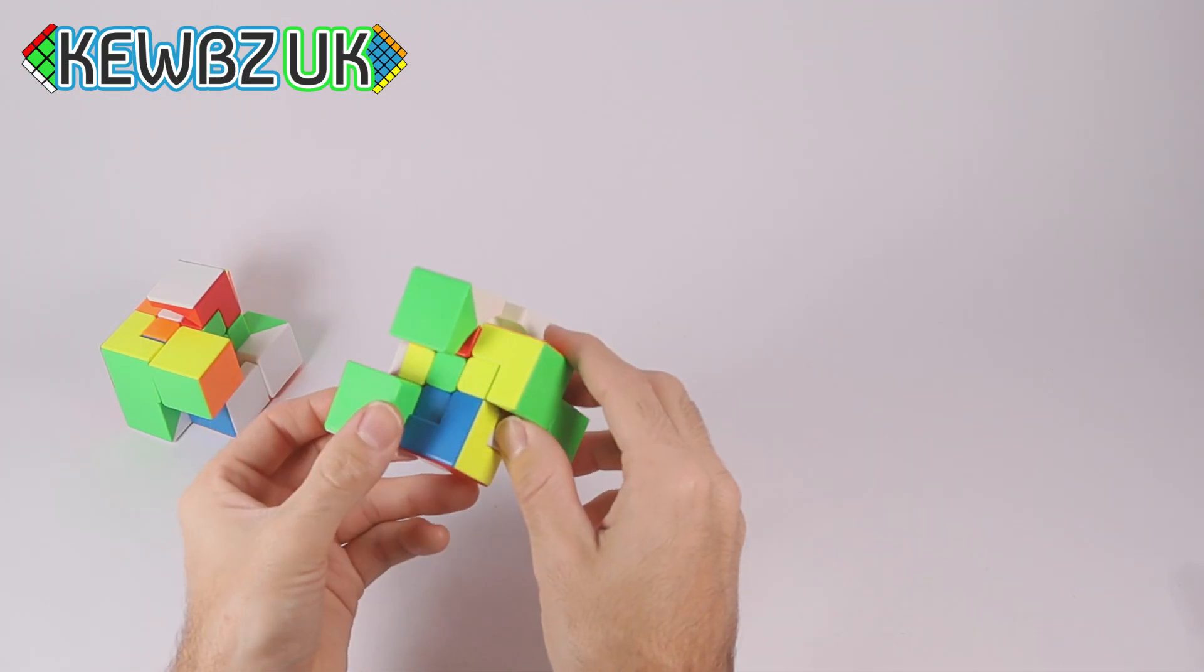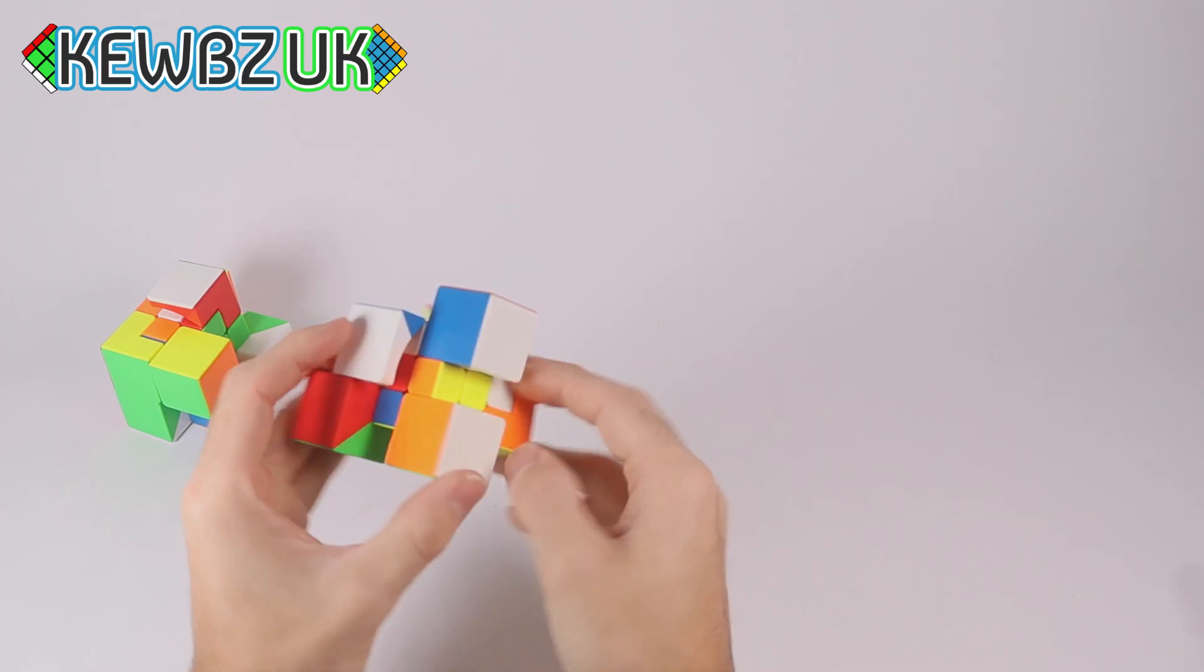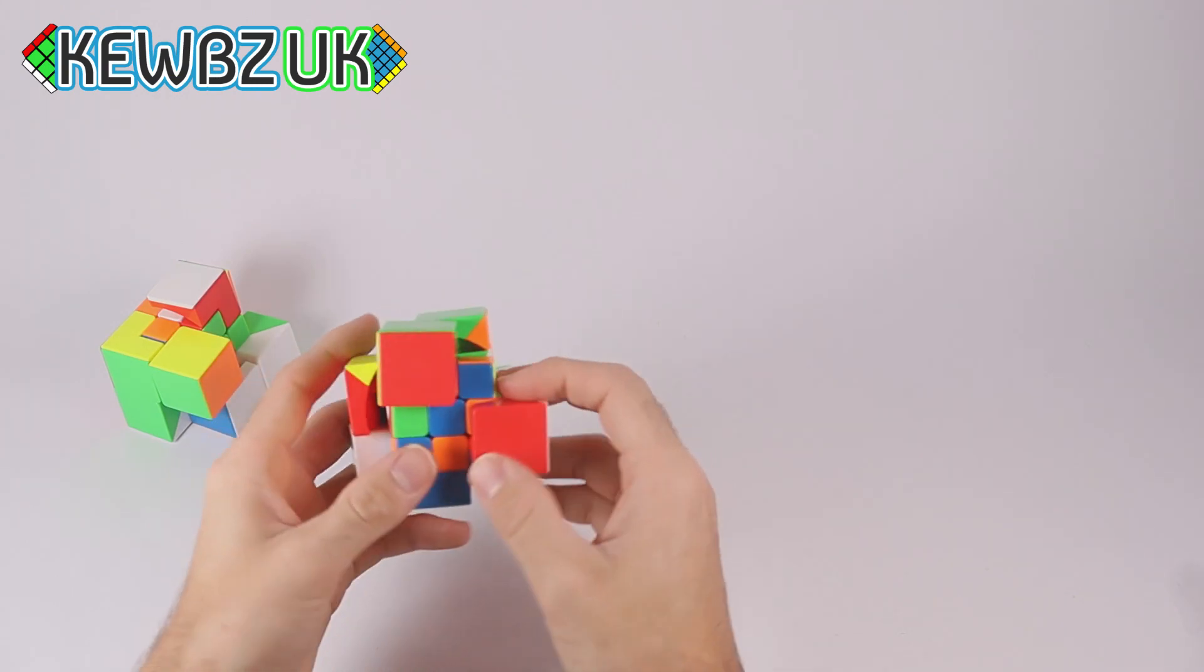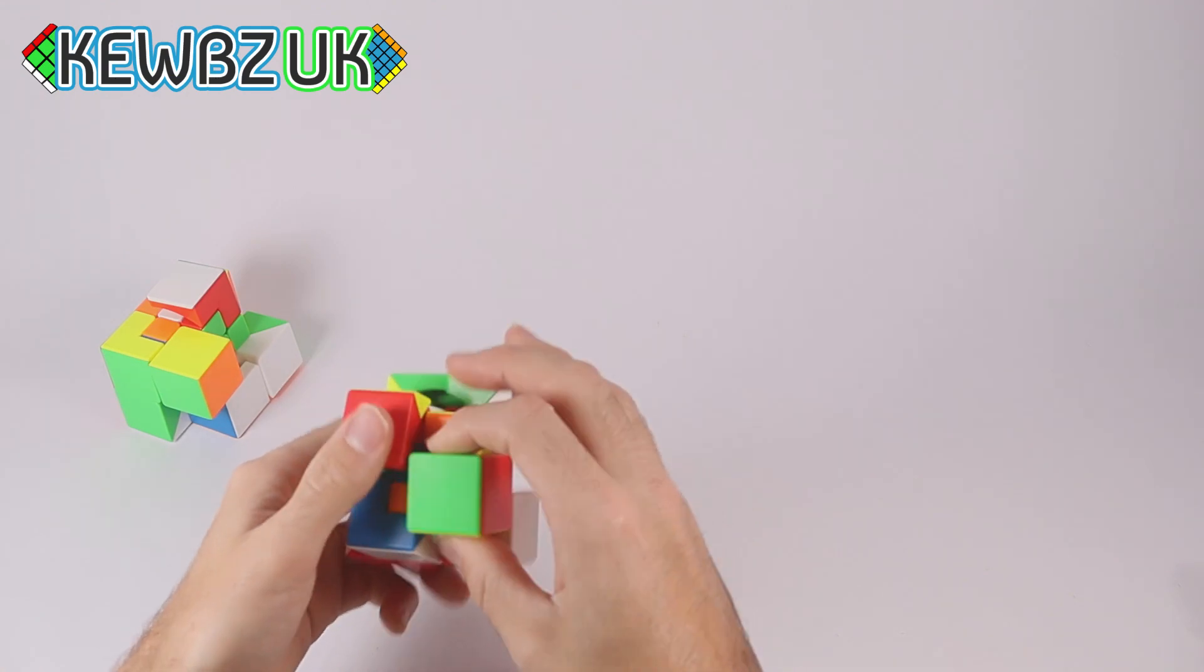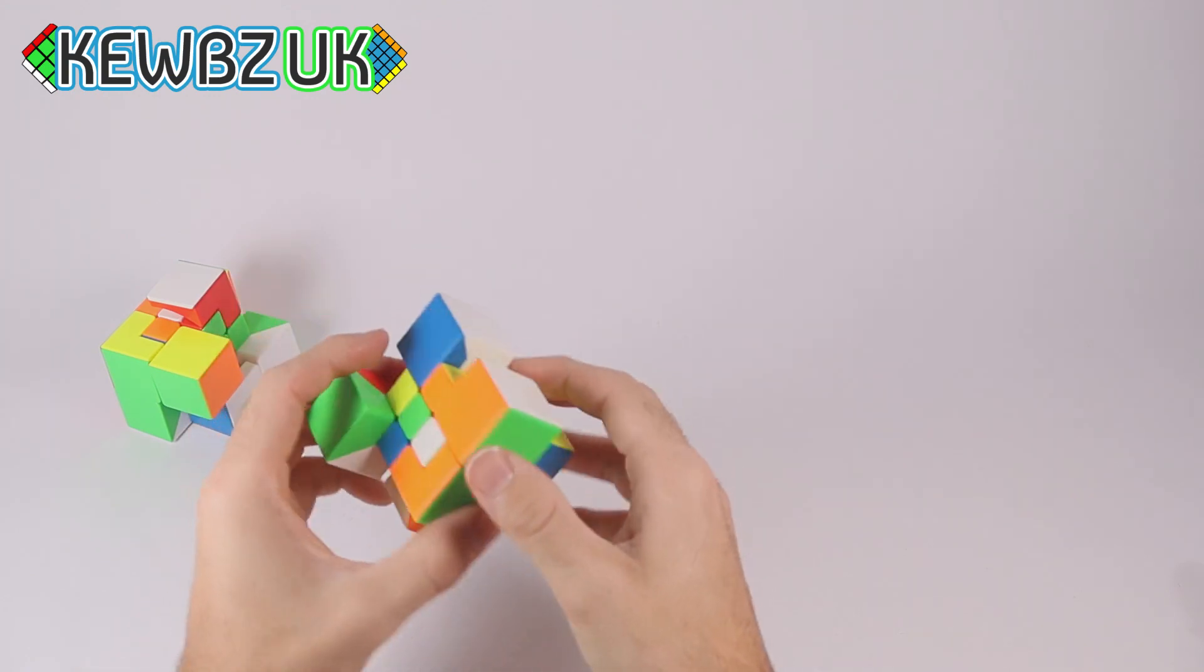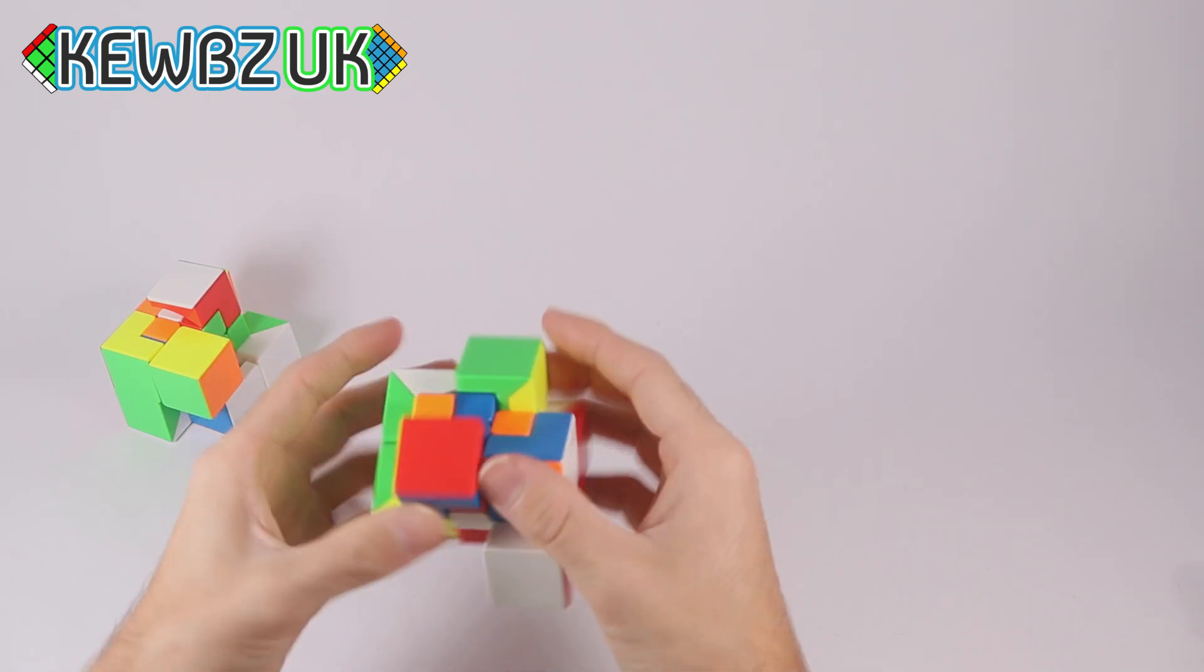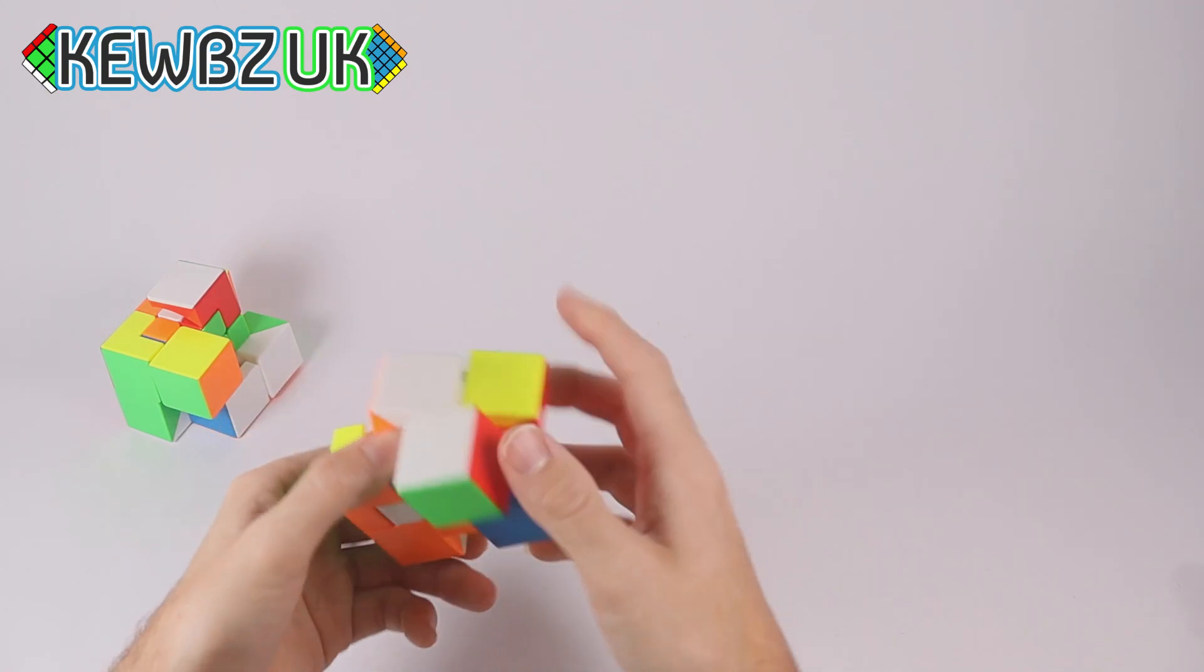So, you can still see the kind of three by three shape to it. And I genuinely have no idea where I would even start to solve this. However, I do want to give it a go. I'm not very good with bandaged cubes. But, I wonder if there's an easy trick or knack to solving it.